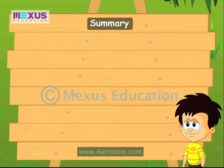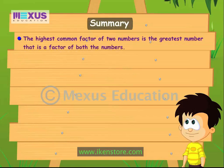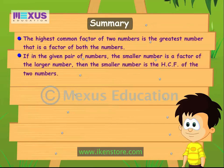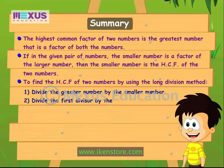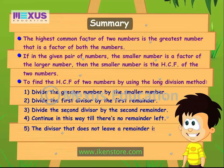It's time for a recap. The highest common factor of two numbers is the greatest number that is a factor of both the numbers. If the smaller number in a given pair is a factor of the larger number, then the smaller number is the HCF. To find the HCF using the long division method: divide the greater number by the smaller, then divide each divisor by the remainder, continuing until there is no remainder left. The divisor that leaves no remainder is the HCF.